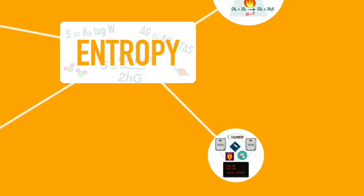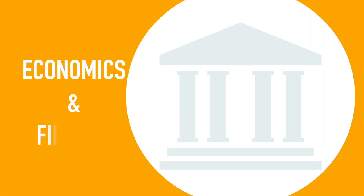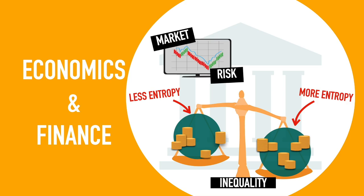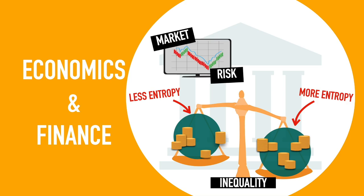Entropy has also found applications in economics and finance. In macroeconomics, entropy can be used as a measure of income inequality. A society where everyone has the same income would be a society that maximizes its entropy. Entropy is a measure of uncertainty, so it can also be used in finance and investment strategies as a measure of risk.